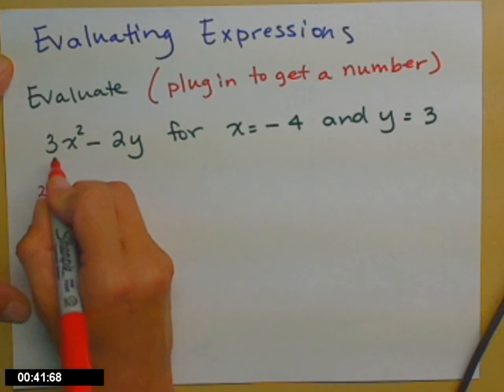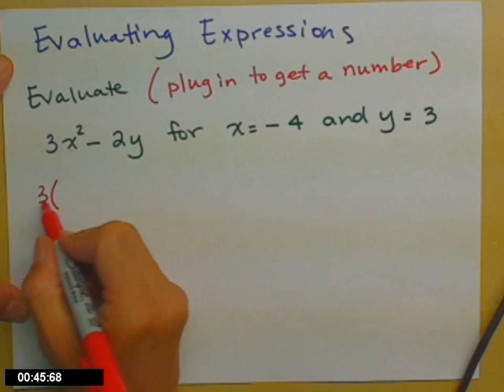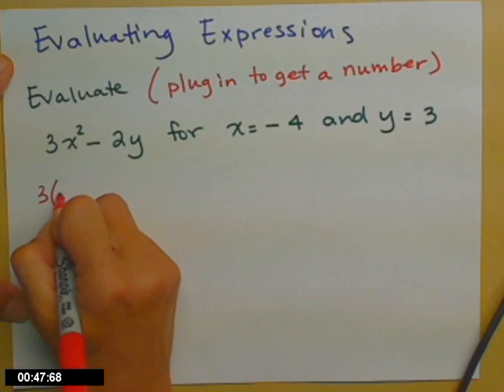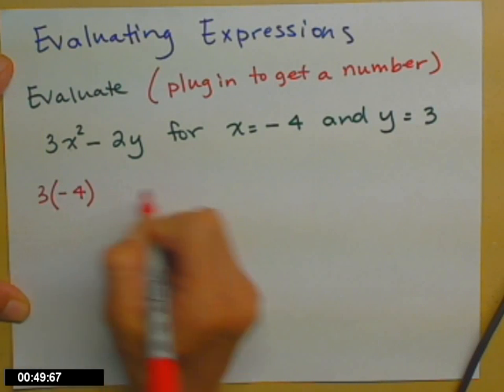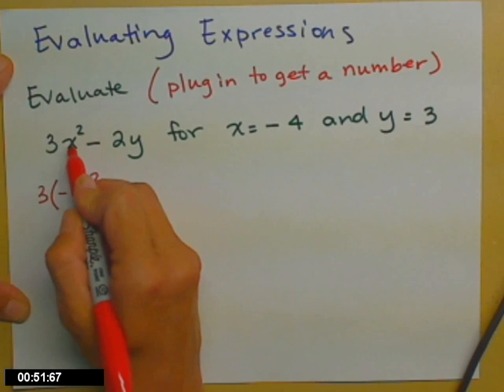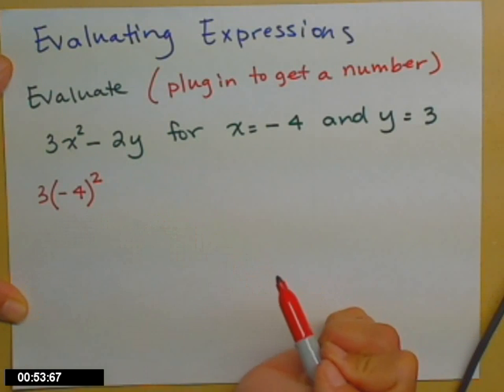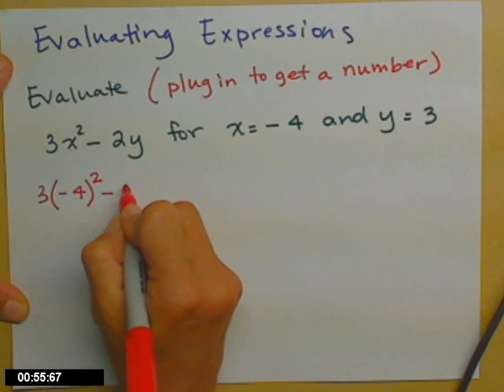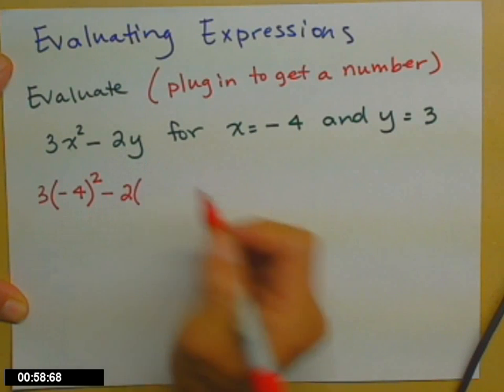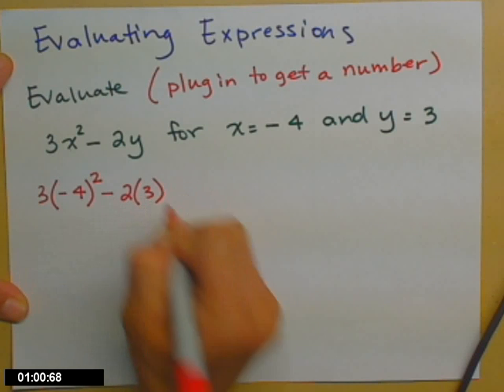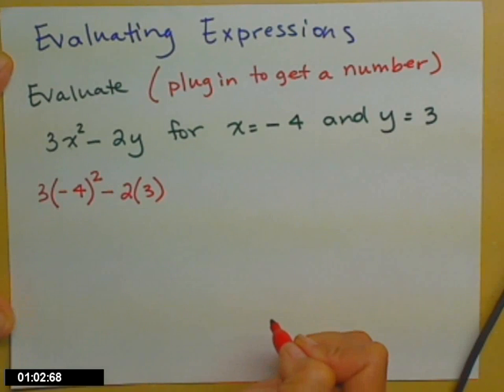So I have 3, and it's times x squared, so I'm going to write with parentheses, 3 right next to the parentheses for the negative 4, and then the squared is attached to the x, currently being played by negative 4, and then minus 2 times y, and again you can just use those parentheses to indicate the multiplication.